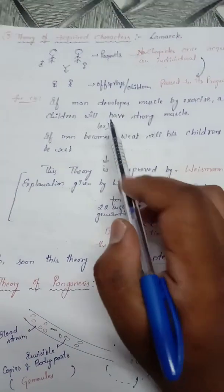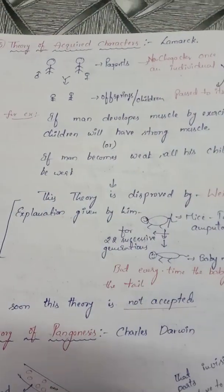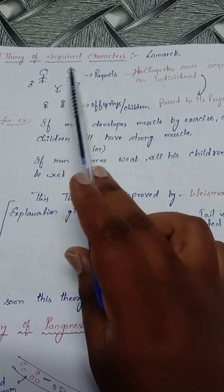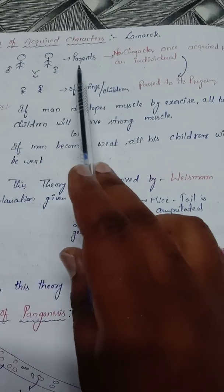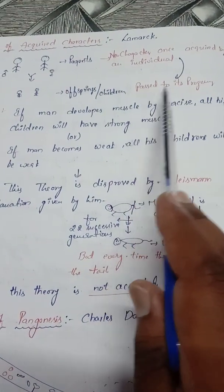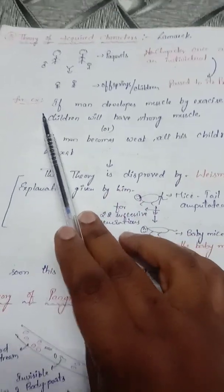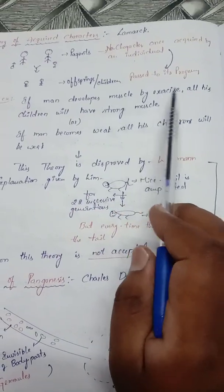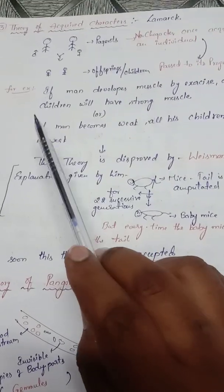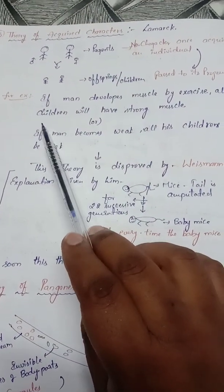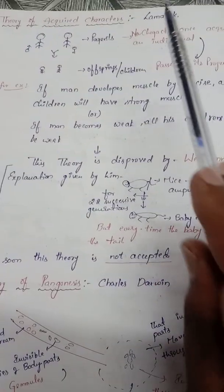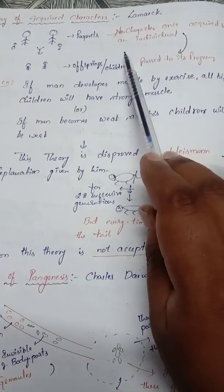Next is the theory of acquired characters given by Lamarck. According to this theory, new characters once acquired by an individual are passed to its progeny. For example, if a man develops muscles by exercise, all his children will have strong muscles; or if a man becomes weak, all his children will be weak. The character acquired by parents is transferred to their progeny.